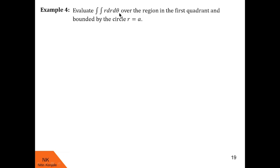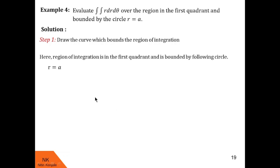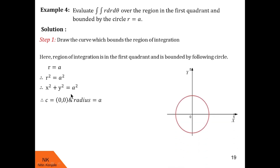Now let us go ahead to the final example. Here we are asked to evaluate the double integral of r dr dθ over the region in the first quadrant bounded by the circle r = a. To find the center and radius, we square both sides: r² = a², giving x² + y² = a², a standard circle centered at the origin with radius a. Since the region is in the first quadrant and bounded by that circle, that quarter-circle is the required region of integration.